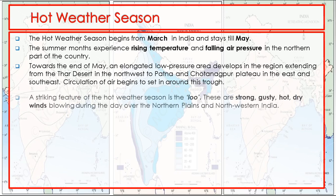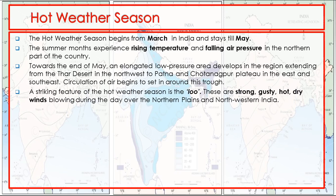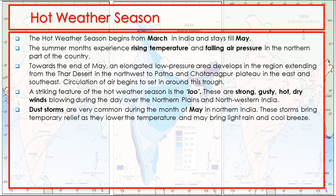A striking feature of the hot weather season is the Loo. These are strong, gusty, hot, dry winds blowing during the day over the northern plain and northwestern India. Dust storms are very common during the month of May in northern India. These storms bring temporary relief as they lower the temperature and may bring light rain and a cool breeze.